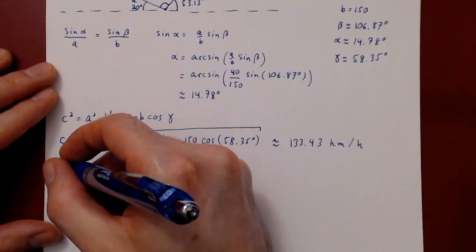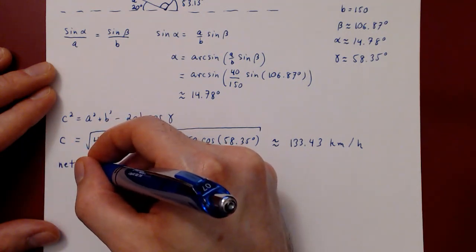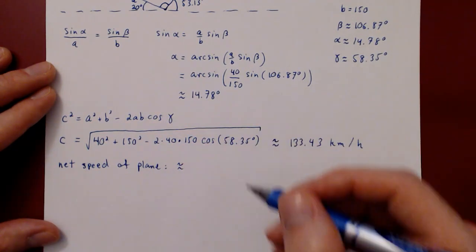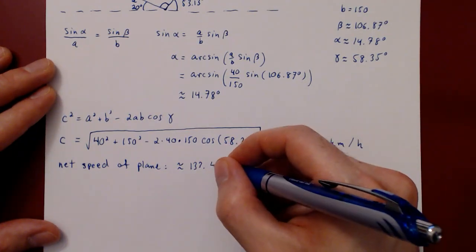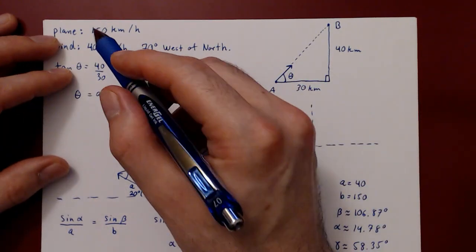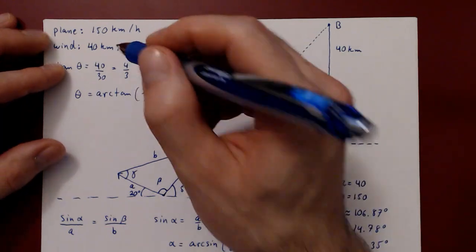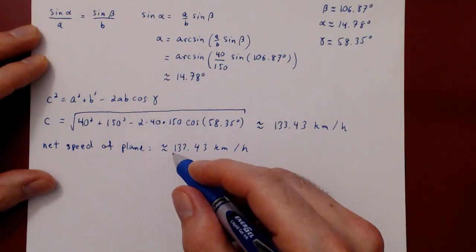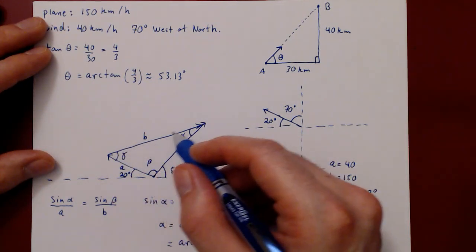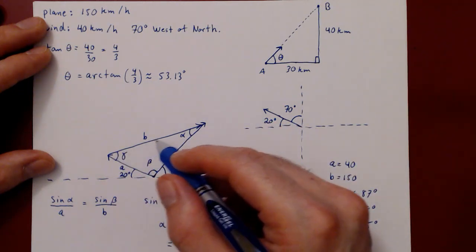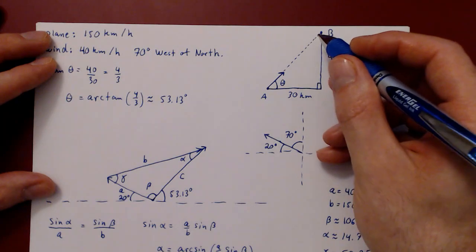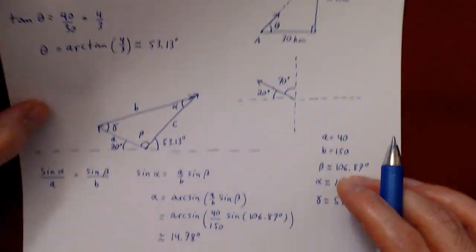So the net speed of the plane is approximately 133.43 kilometers per hour. Initially the plane could travel at 150 km/h, but because of interference from the wind it slows down to 133.43 km/h. Now we're missing the orientation — in which direction do we point the plane so that the net result has the plane traveling perfectly in a straight line from city A to city B? It's not quite γ, because γ is not the angle from the horizontal.